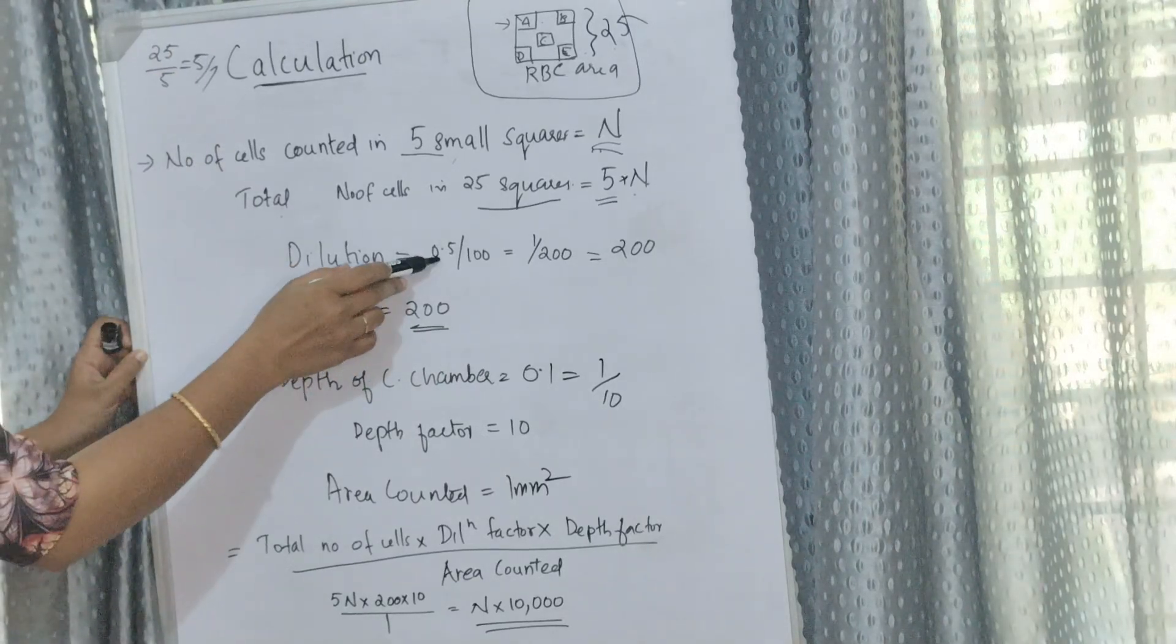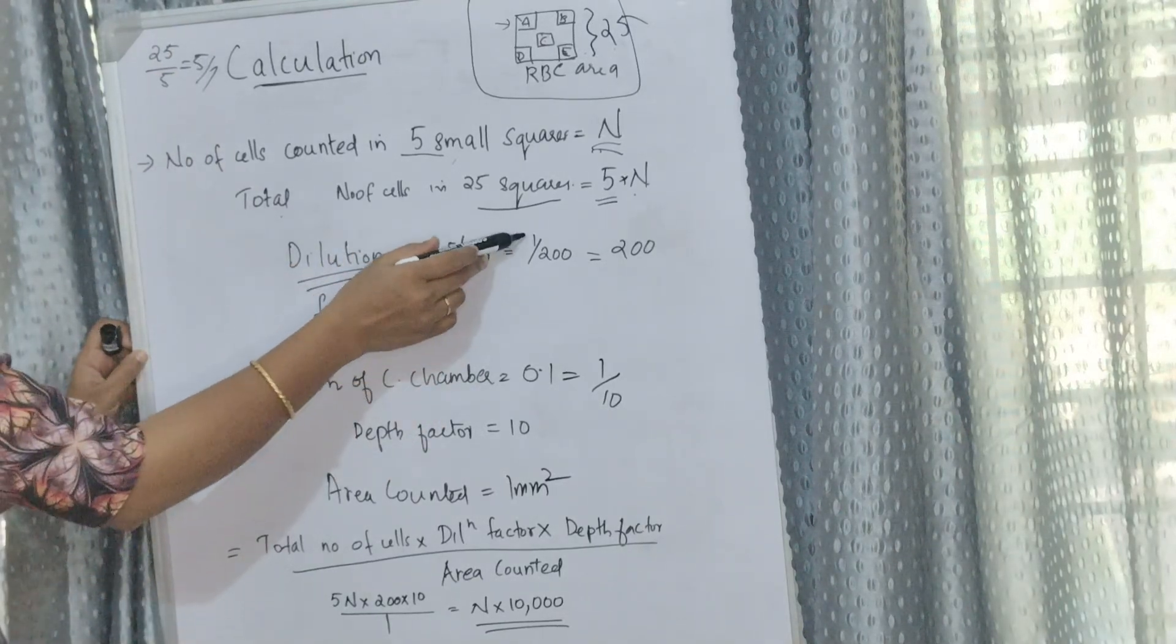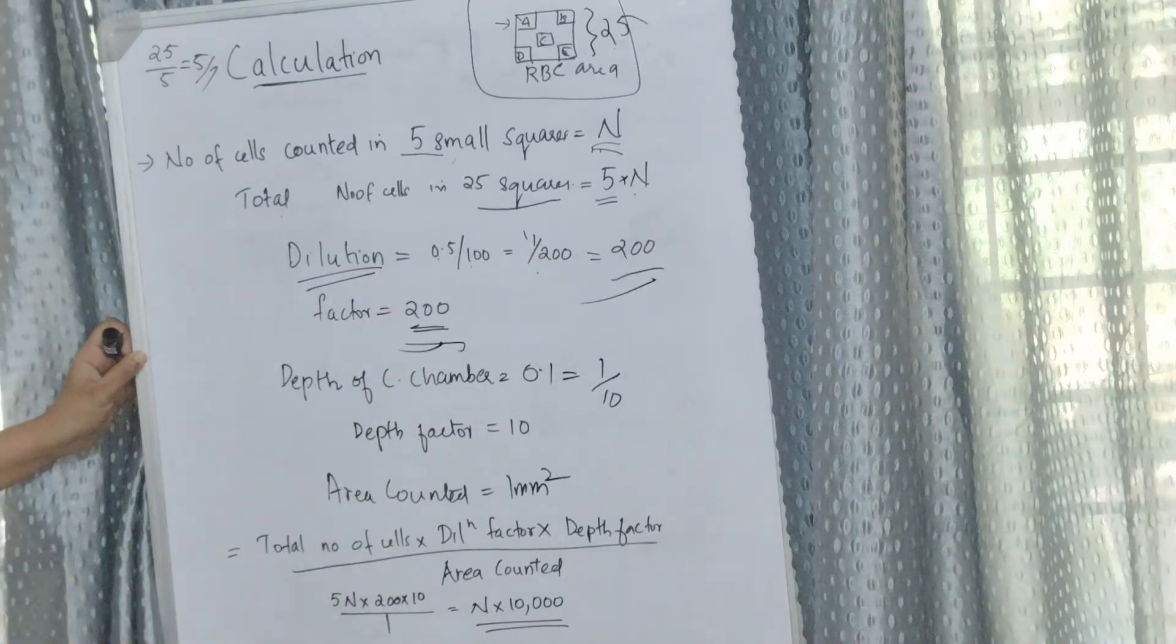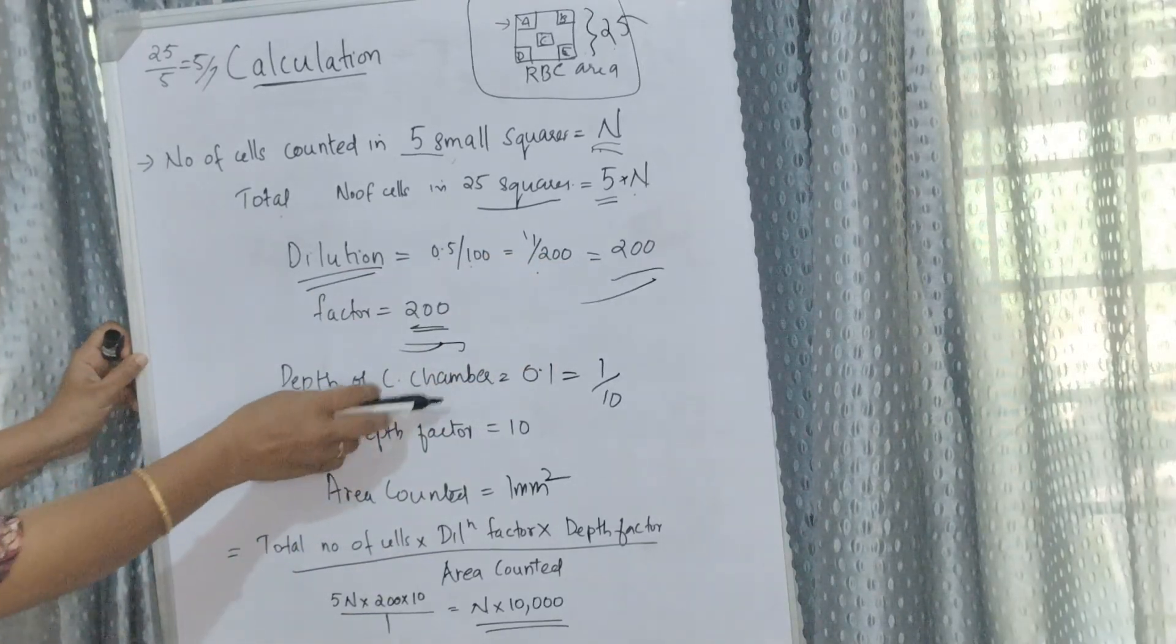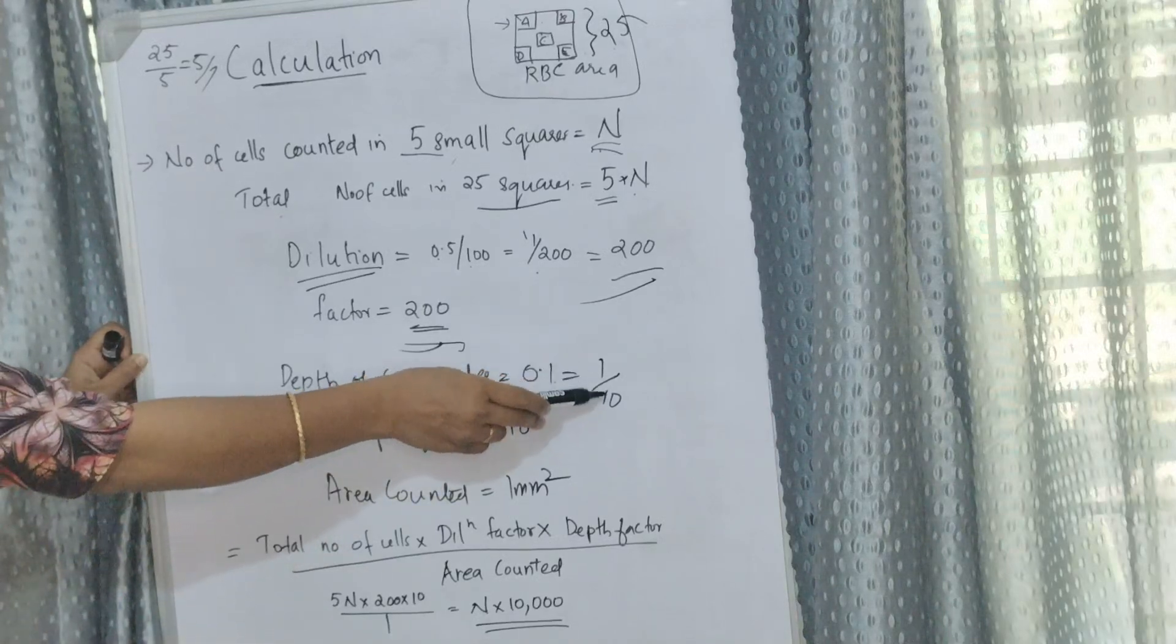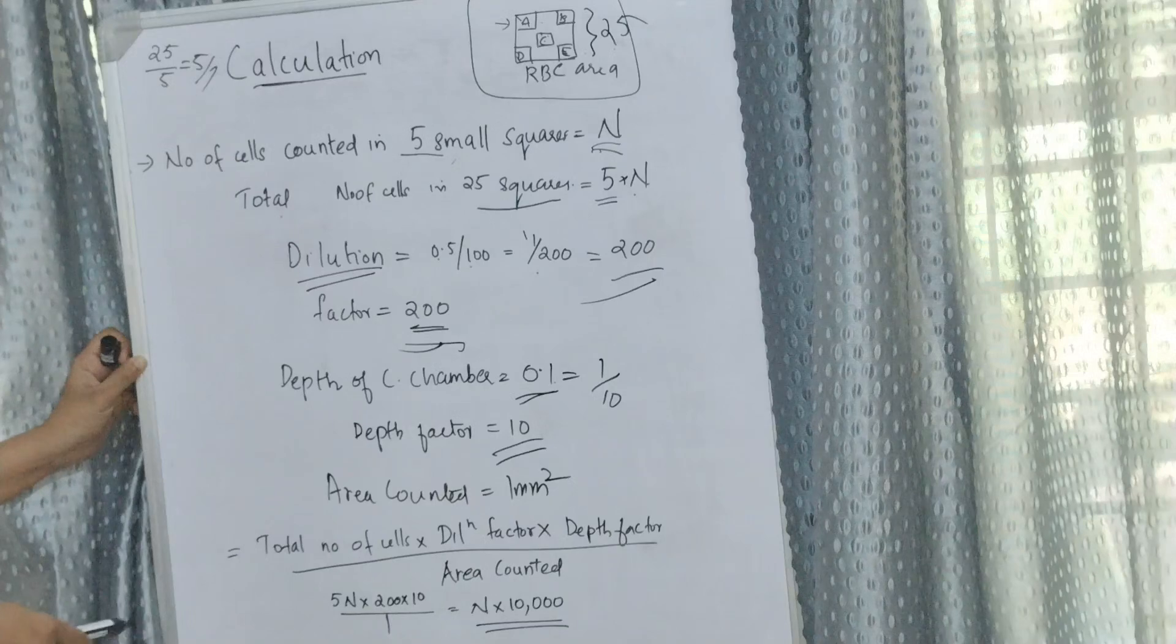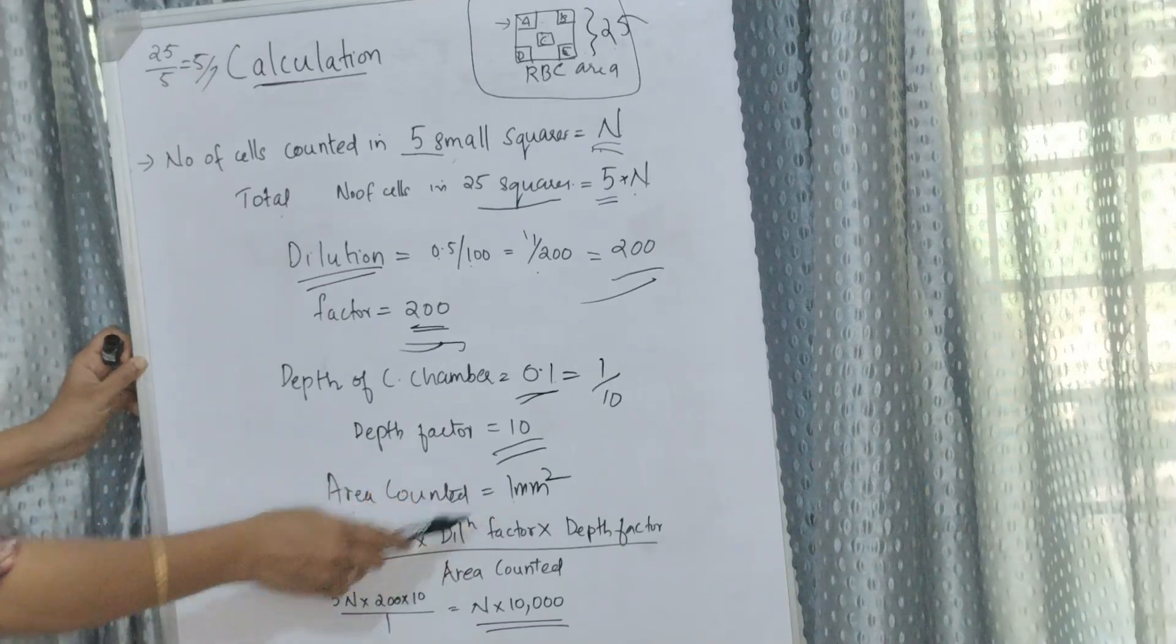Dilution factor: Dilution for RBC count is 1 in 200, so the dilution factor is 200. Depth of the counting chamber is 0.1, which equals 1 by 10 or 1 in 10. So the depth factor is 10.